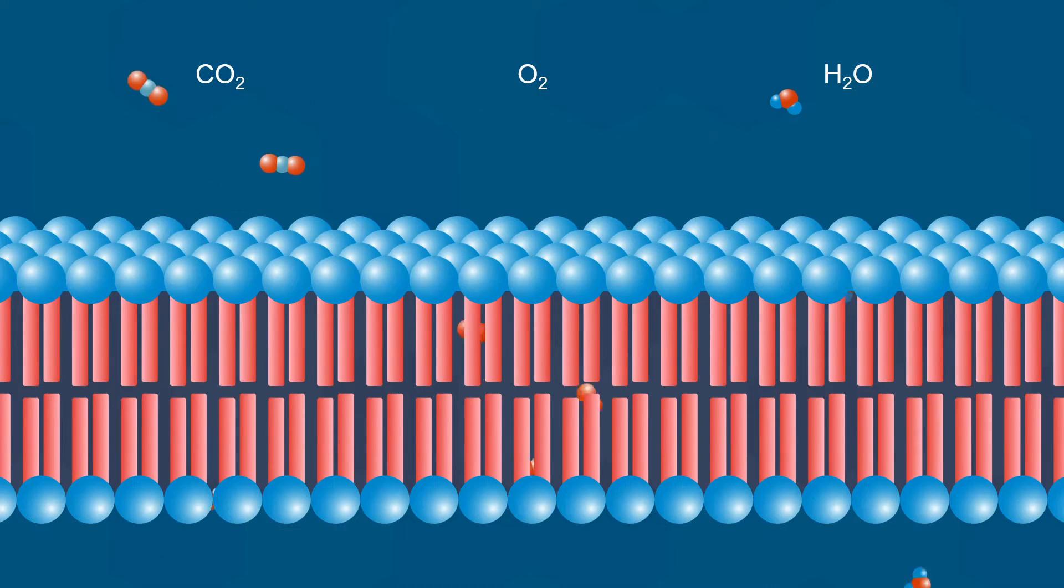The direction of net movement depends on concentration gradients, which we will discuss in class. In the case of water, the net direction of movement depends upon osmotic pressure, which is something you will have learned about in high school. As molecules get bigger and more polar, they are generally unable to pass through the cell membrane and are usually blocked, as is the case for the glucose molecules shown here.